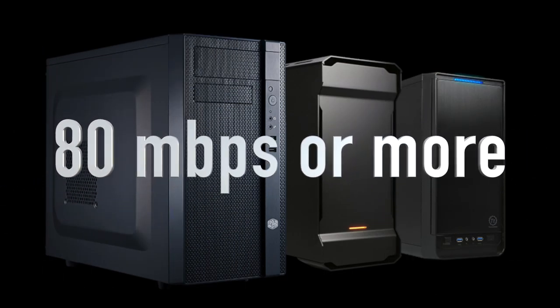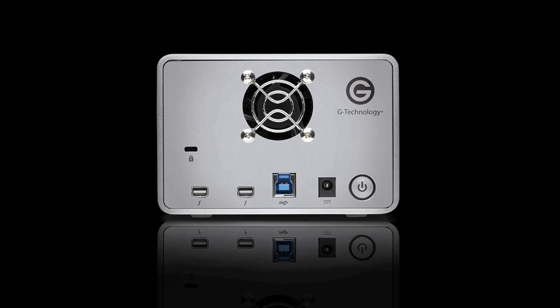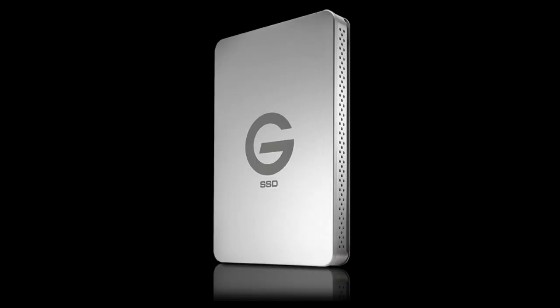Then there's the edit codec, which is intended to be edited on a desktop machine, not inside the camera. This codec renders each frame fully so that the computer doesn't need to waste time decompressing each frame on the fly. This takes a lot more space and requires a faster recording medium, like a Thunderbolt drive or an SSD.